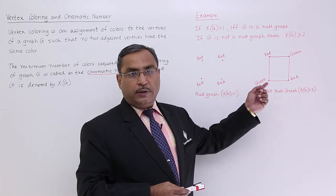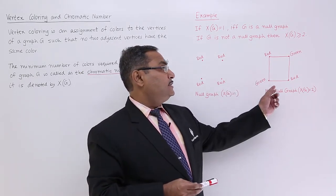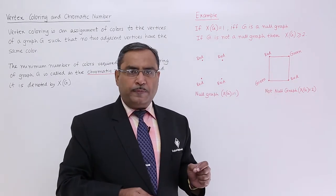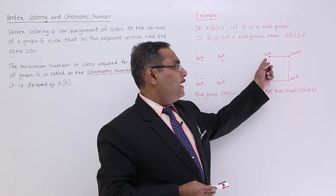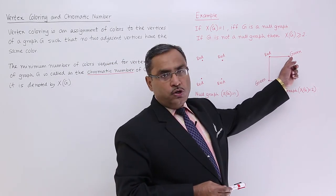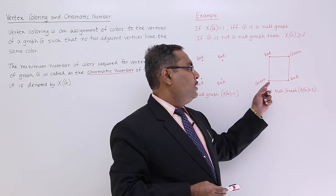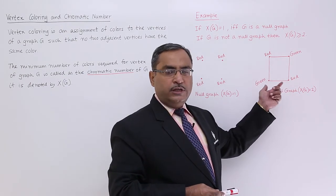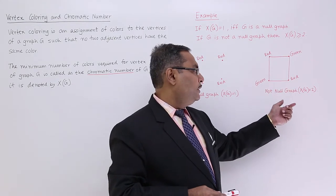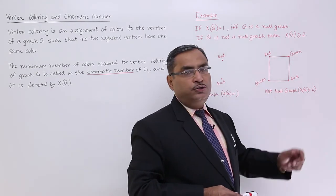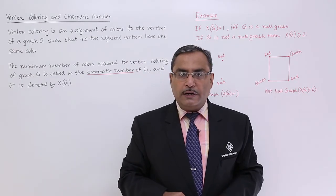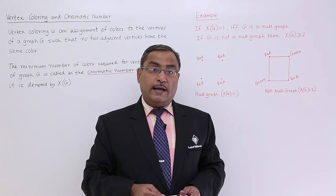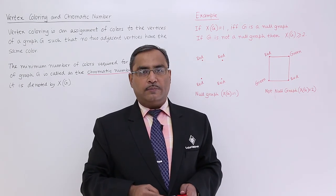But consider this one. It is a connected graph, and in this case, it is not a null graph, and here you see the minimum number of colors required is 2. I can put them red. The adjacent nodes are not having the red color. You can put it green. The adjacent nodes are not having the green color. In this way, the constraint has been followed. χ(G) is equal to 2 for this particular graph. For this graph, the chromatic number is equal to 2. For the previous graph, the chromatic number is equal to 1, and that is known as vertex coloring and the chromatic number.